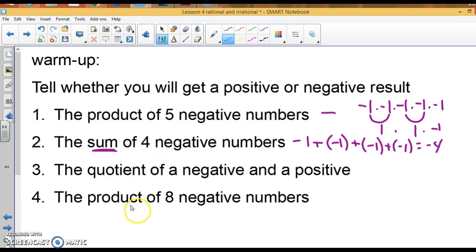The quotient of a negative and a positive will mean you're going to divide. So if I do a negative divided by a positive, I'm going to end up with a negative. The product of eight negatives, so multiply eight negatives. That's an even number of negatives, it's going to end up with a positive number.